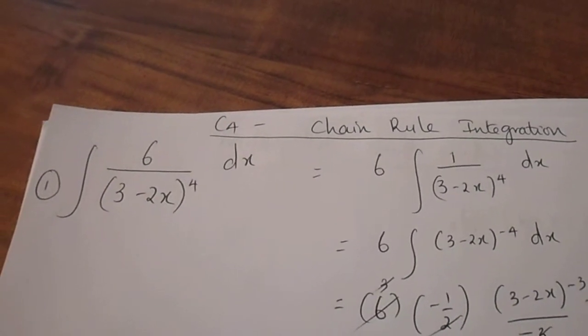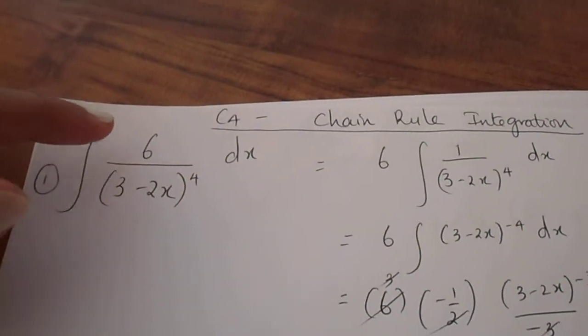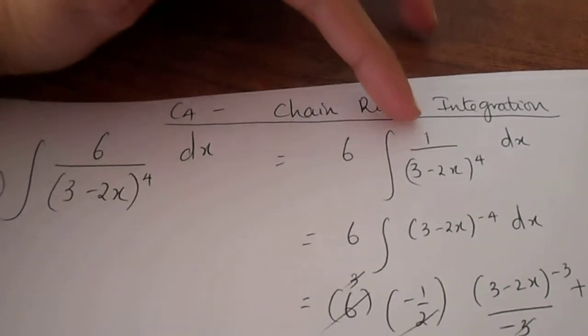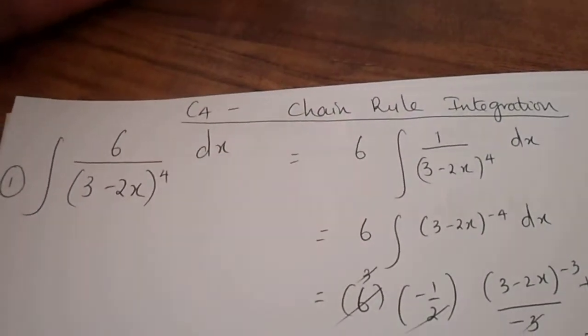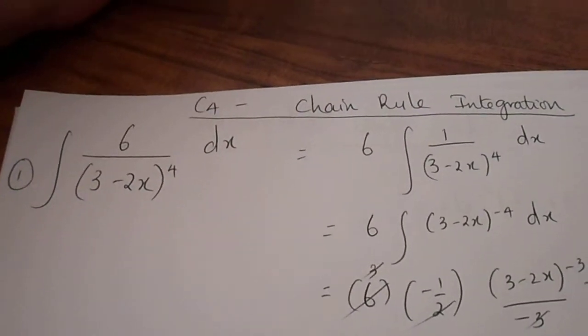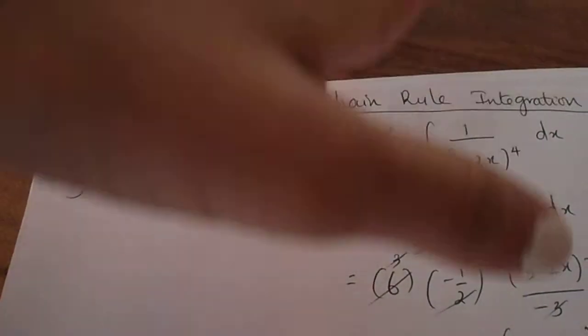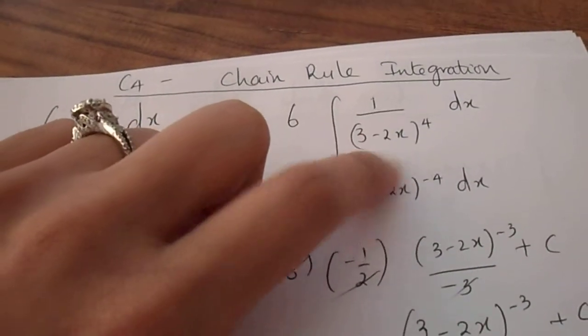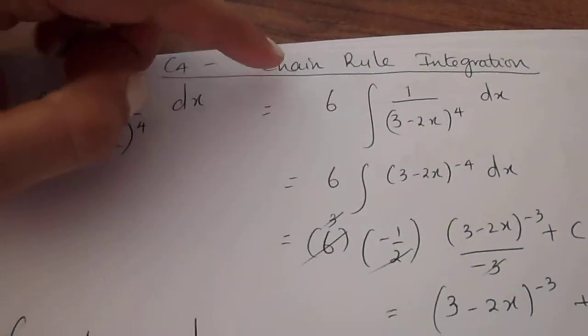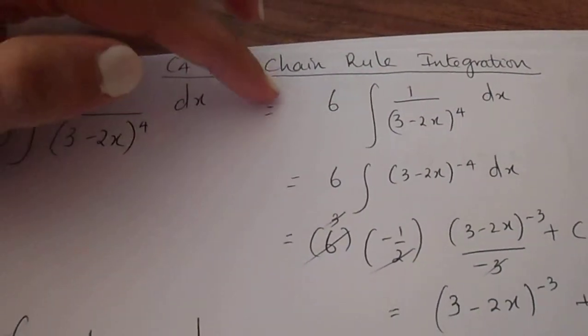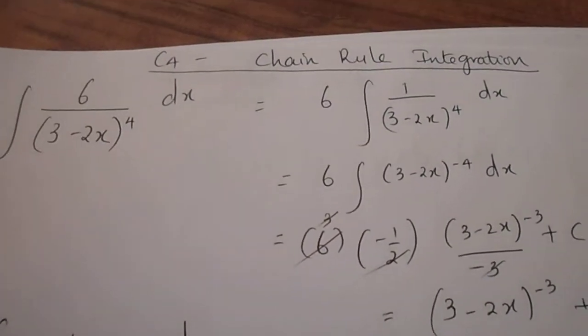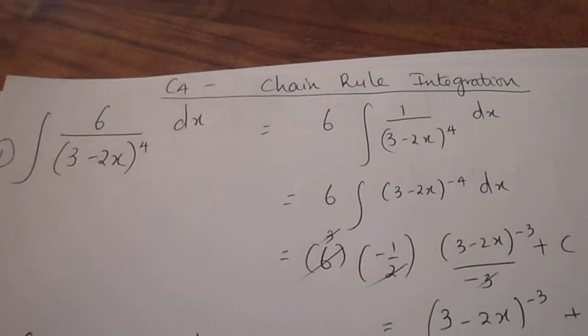Whenever you have a constant being multiplied or divided by an overall function, always pull the constant outside. The reason I advise students to do this is because it neatens and simplifies the look of the question. So you are left with 6 integral of 1 over 3 minus 2x to the power of 4 dx.